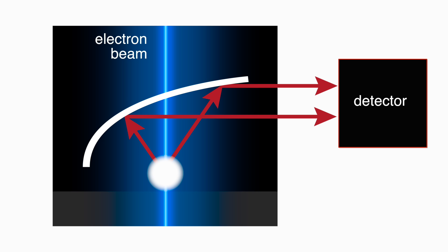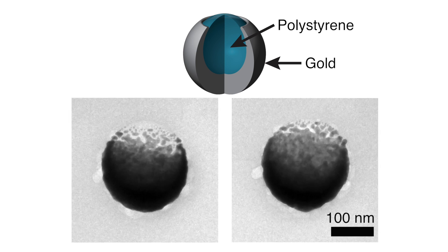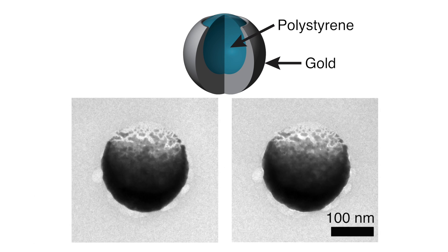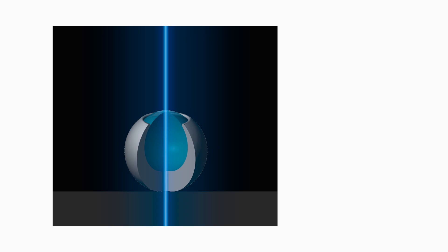Let's see what this actually looks like. Here is a tiny nanoscale crescent, made from a polystyrene sphere coated with a gold shell. If we excite this crescent with an electron beam in the electron microscope, we discover that it emits light in a few different ways.